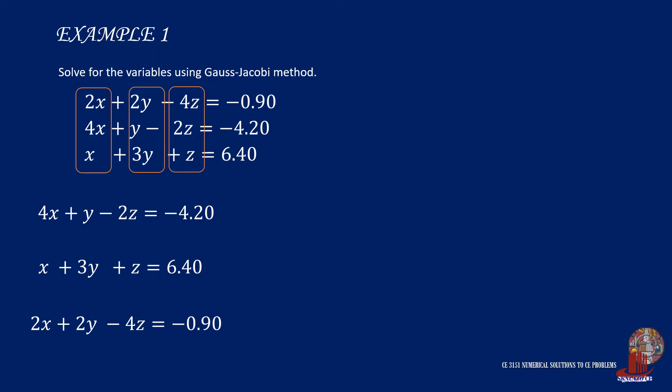The next check is done horizontally. For the first equation, the coefficient of x is compared with the coefficients of the other variables. That is, is 4 greater than or equal to the sum of the absolute values of 1 and negative 2? The answer is yes, as we get 4 is greater than or equal to 3.